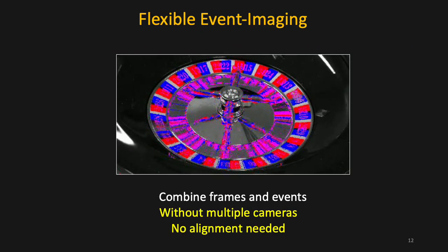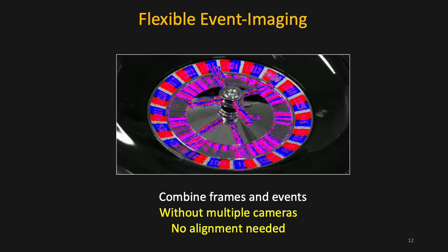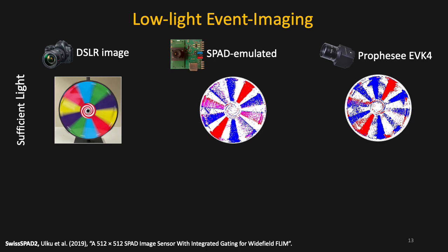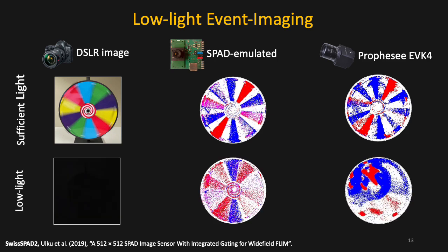By virtue of being software defined, our approach can compute both intensity frames and their aligned events simultaneously with a single camera. Our emulated events inherit the low-light imaging capabilities of single photon cameras. We compare our event stream to that of Prophesee EVK4, a state-of-the-art commercial event camera. While the two outputs are comparable in sufficient light, the performance of the Prophesee deteriorates rapidly in low-light, resulting in strong noise and motion blur.